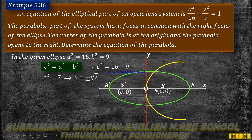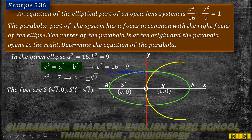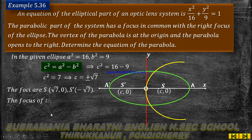We get plus or minus root 7 — two terms. Since the parabola opens to the right, we take the positive value. Therefore c equal to root 7. The focus points are at (root 7, 0) and (minus root 7, 0). Since the parabola opens to the right, the focus is on the right side, so the focus point is (root 7, 0).